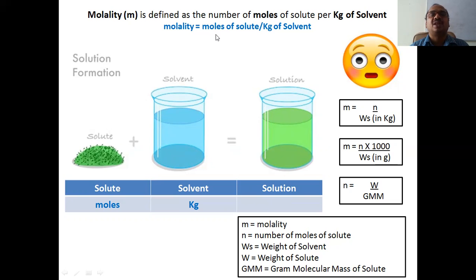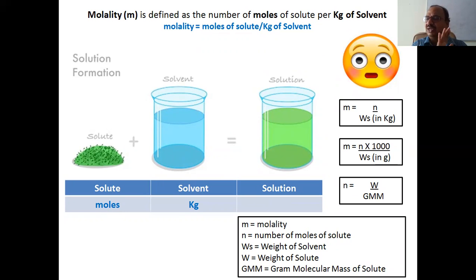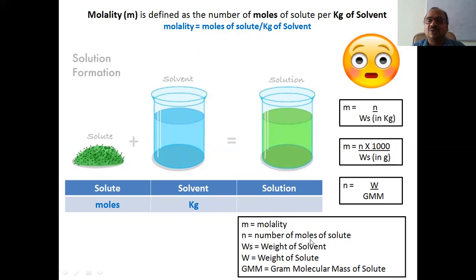Molality is indicated by small m. Molality = moles of the solute divided by kg of the solvent. We never bother about moles of solvent, moles of solution, or volume at all — only the solvent must be mentioned in kg. Formula: m = n / W(s), where n = w / GMM as usual, and W(s) = weight of the solvent in kg.